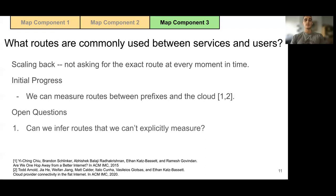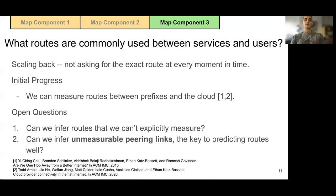This inference could be enabled by inference of unmeasurable peering links — recalling that paper from one of our opening slides, this is a major problem and is the key to inferring routes with high confidence. Please see our paper for a more thorough discussion of all of our ideas for building these components and the open questions that remain.